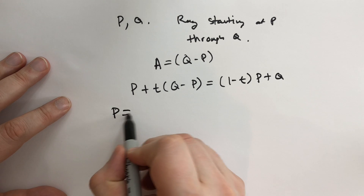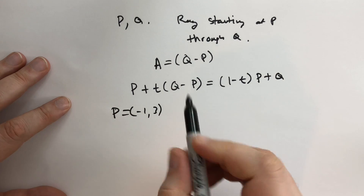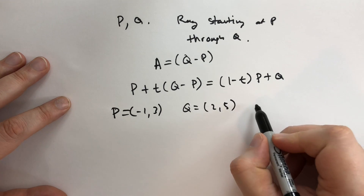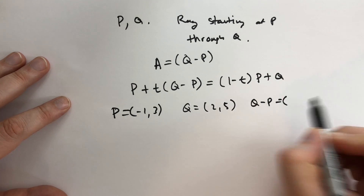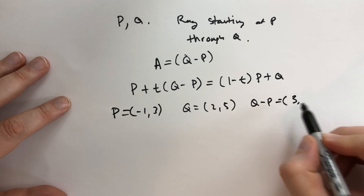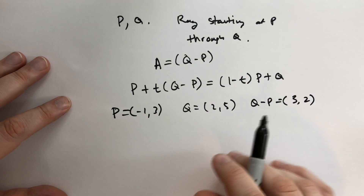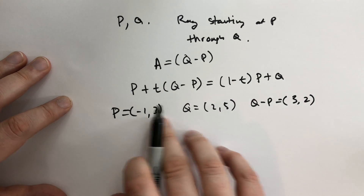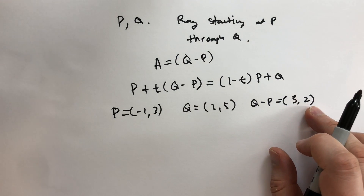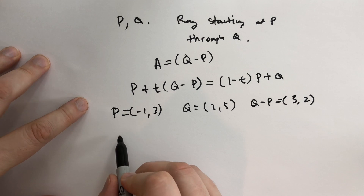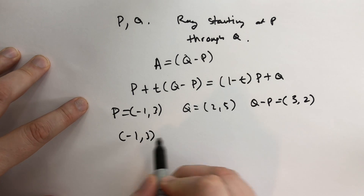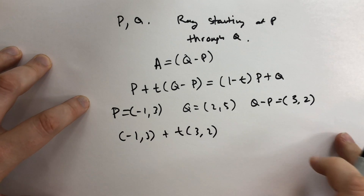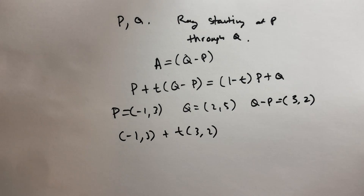So, for example, if we had P equal to minus one comma three, same as before, and Q equal to two comma five, then Q minus P would equal three comma two — because two minus negative one is three, and five minus three is two. And then all the points on the ray would be minus one comma three plus t times three comma two. Pretty straightforward.